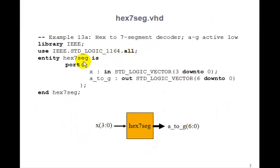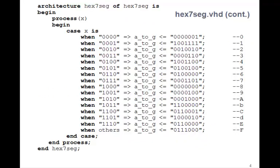So let's see how we'll do it. Here's the same entity we had before. X is the 4-bit input. A to G is the 6-bit output. And in the architecture, we'll just write this big case statement. So it'll be in a process. Remember, case statements have to be in a process. So process X, that's the 4-bit input. Case X is.